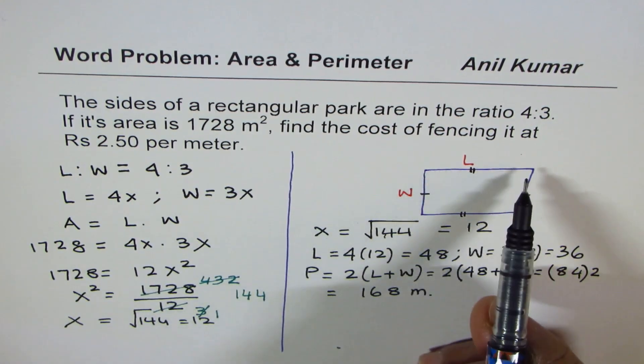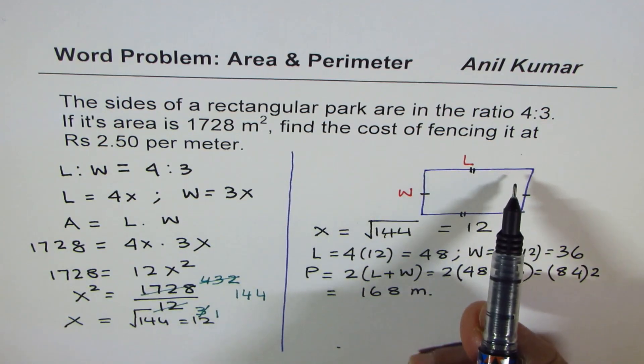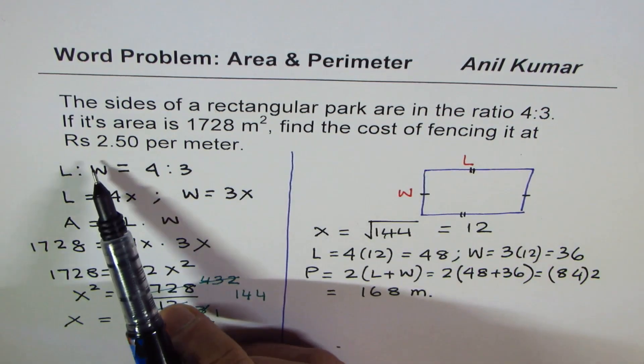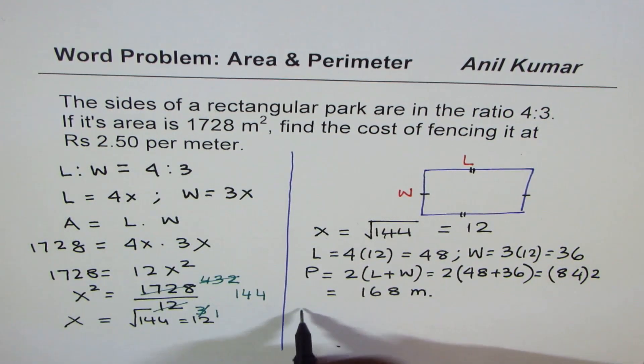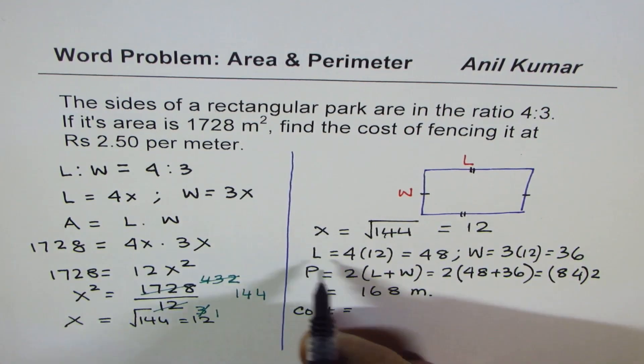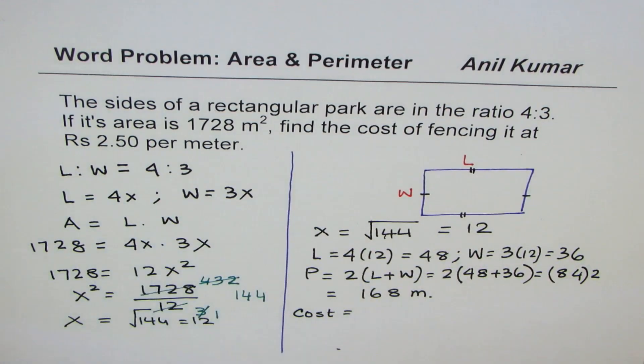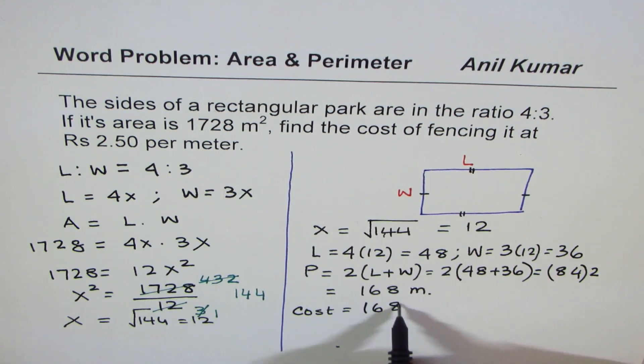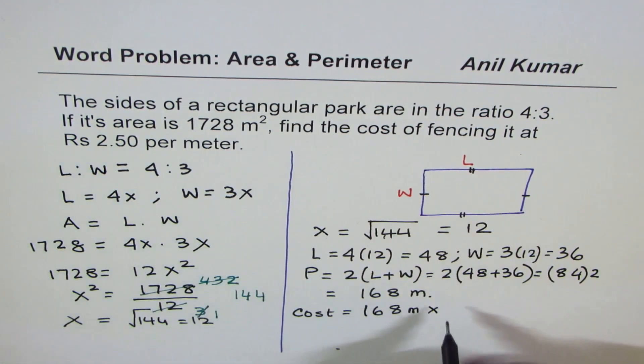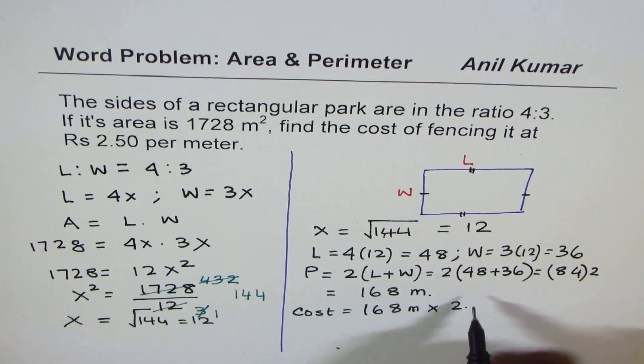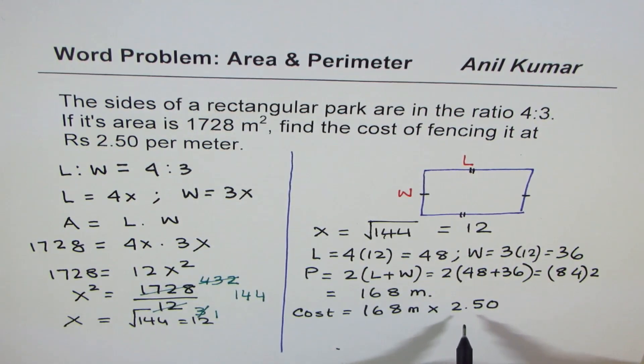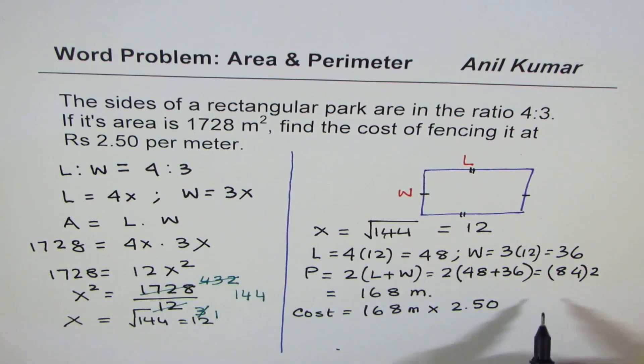Now perimeter is the fencing all around this rectangular park. We need to find the cost of fencing. It is 2.50 per meter. So the cost will be perimeter times the rate, which is 2.50. So we can now multiply the perimeter, which is 168 meters, with the rate, which is Indian rupees 2.50. So that cost is in Indian rupees.